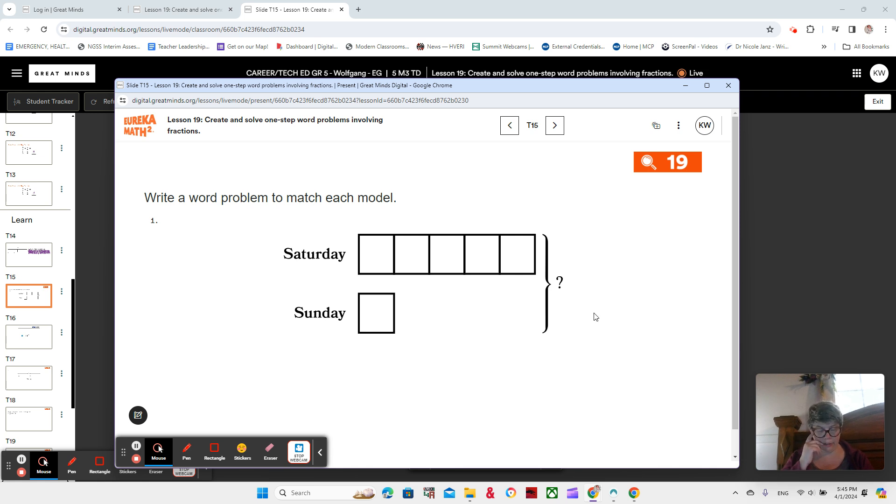So we're looking for a total here. Our unknown value is going to be the total of both of them. And we have a comparison about something that happens on Saturday and something that happens on Sunday.